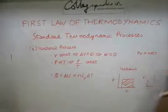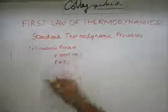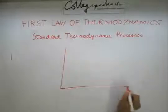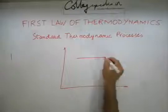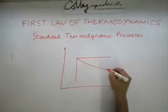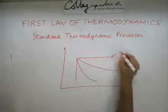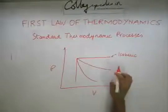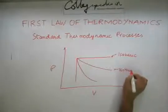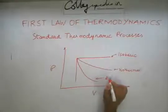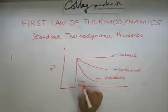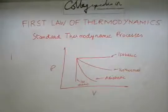Let us just recapitulate all the processes we dealt with in a small nutshell diagram. In our PV coordinate system, we have four processes: this is our isobaric process, this one with the lesser slope is our isothermal process, this is our adiabatic process, and the last one is the isochoric process. So these are the four standard thermodynamic processes we will be dealing with in further discussions.